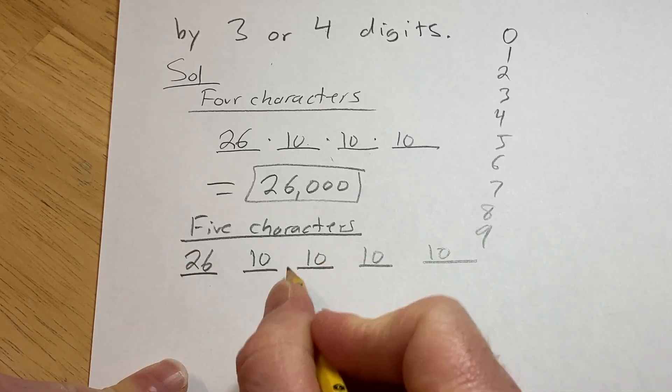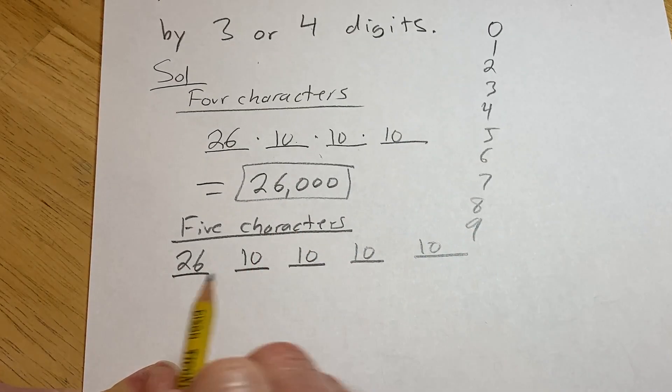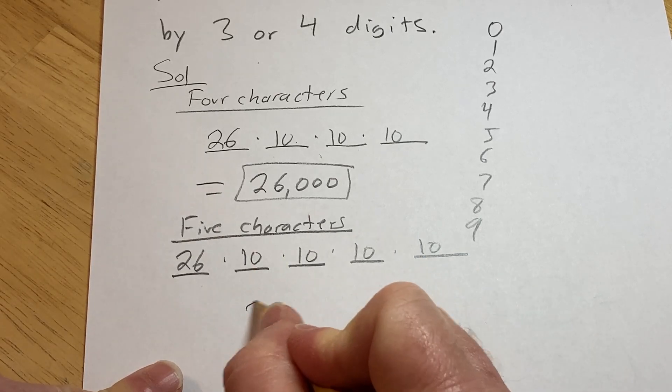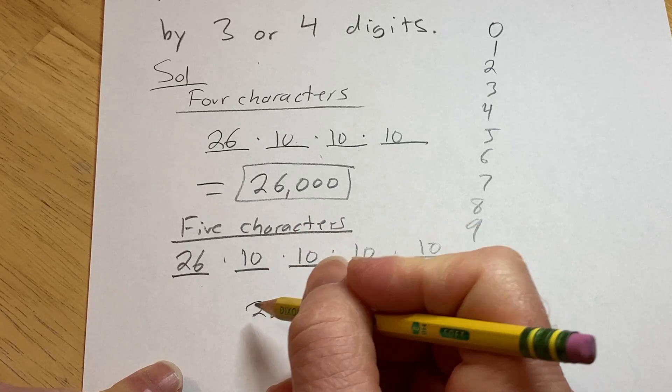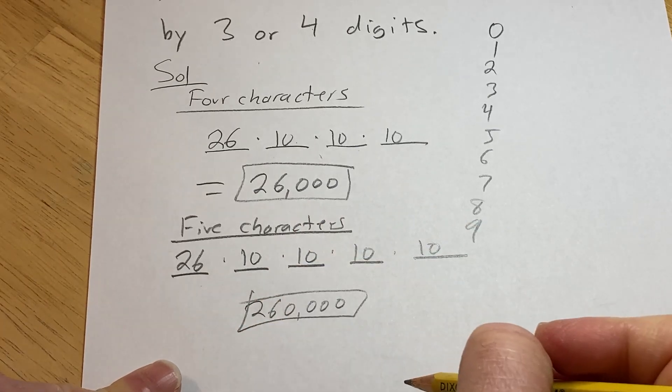So the number of five character passwords is simply going to be the product. So you multiply, and you get 260,000 possible passwords in this case.